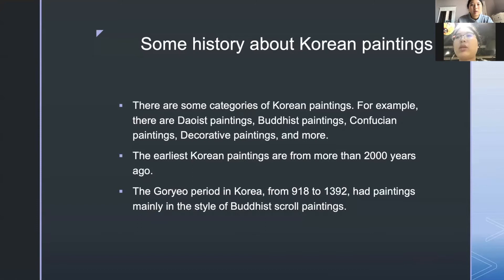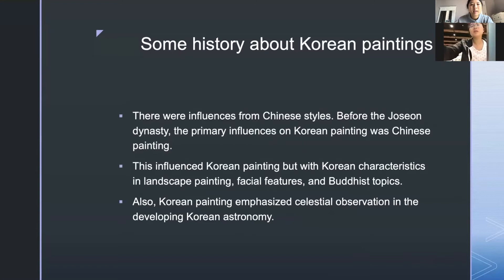The Goryeo period in Korea from 918 to 1392 had paintings mainly in the style of Buddhist devotional paintings. There were many influences from Chinese styles. Before the Joseon dynasty, the primary influence on Korean painting was Chinese painting, which influenced Korean painting but with Korean characteristics in landscape painting, facial features, and Buddhist topics. Korean painting also emphasized celestial observation and the developing Korean astronomy.